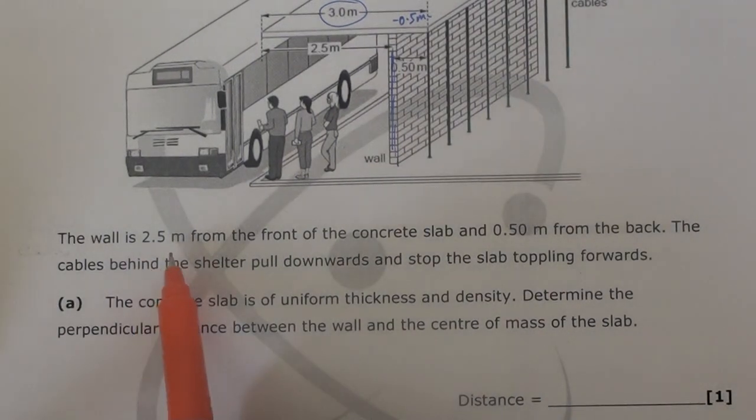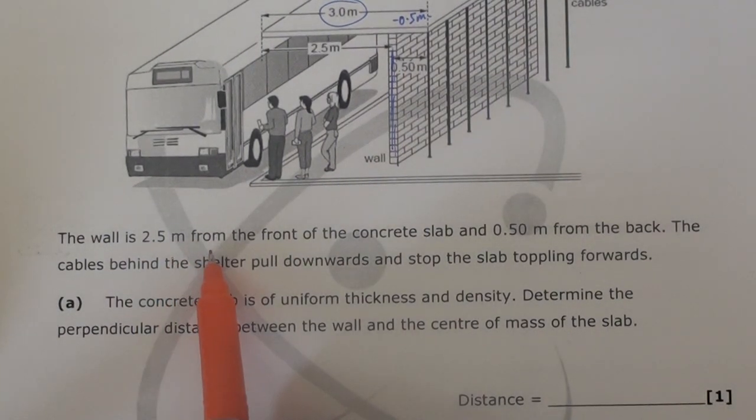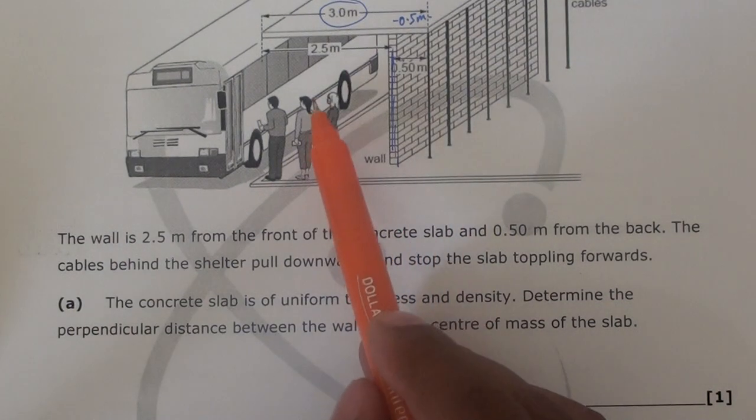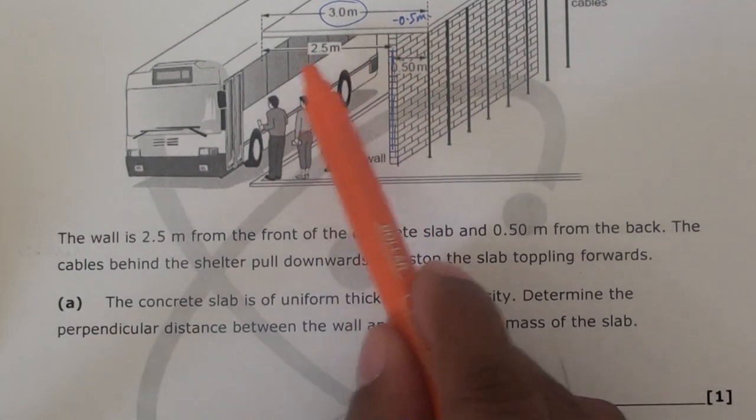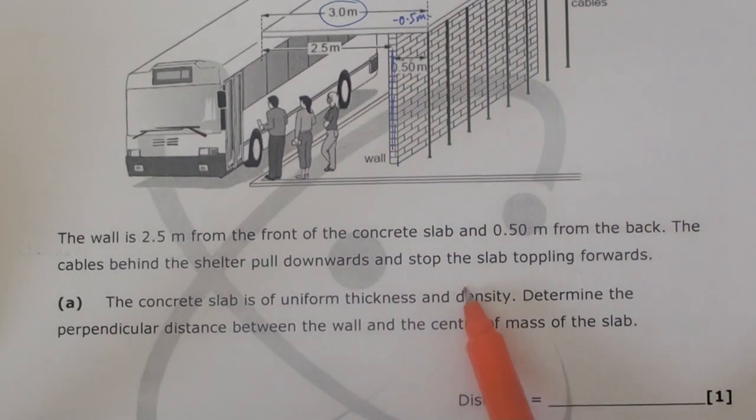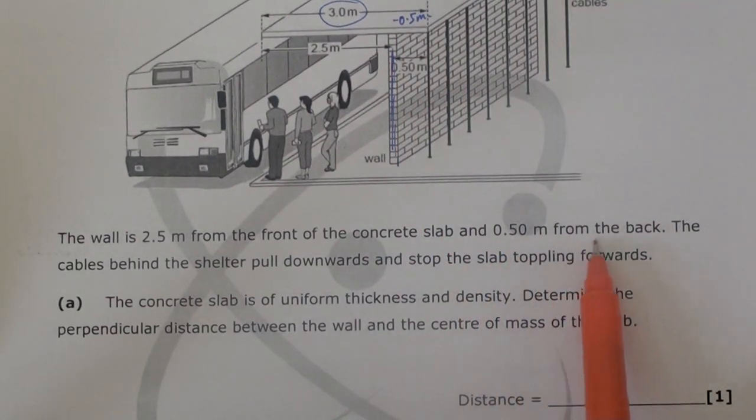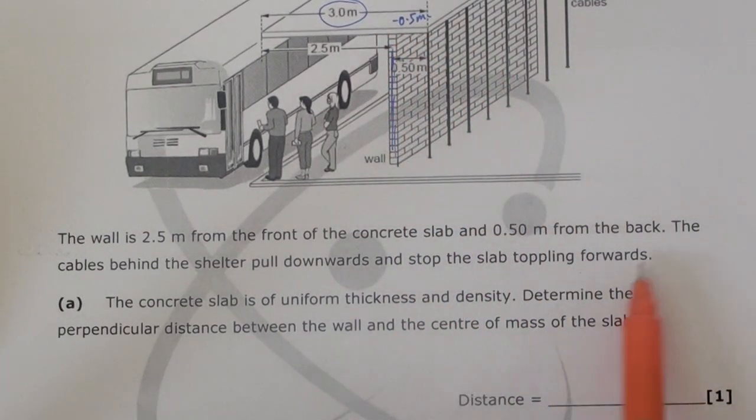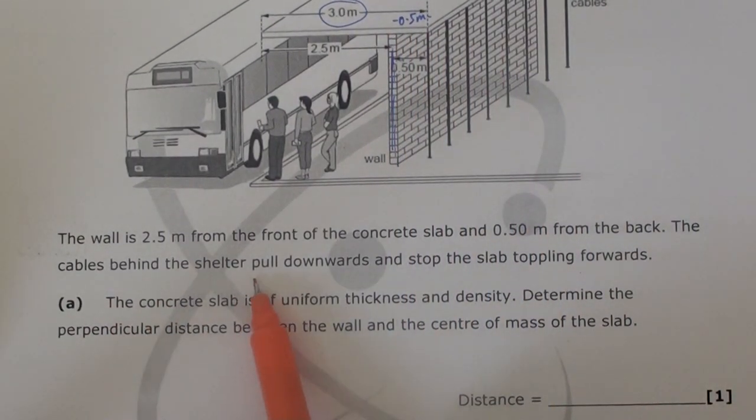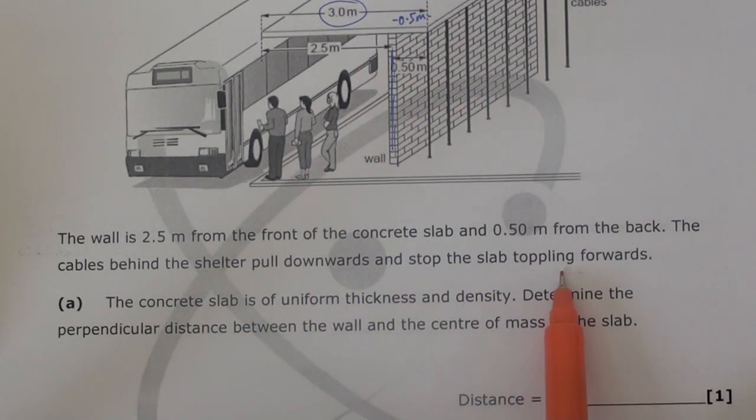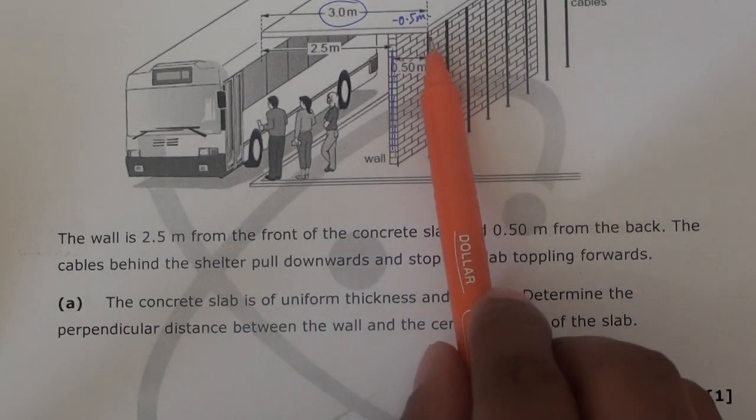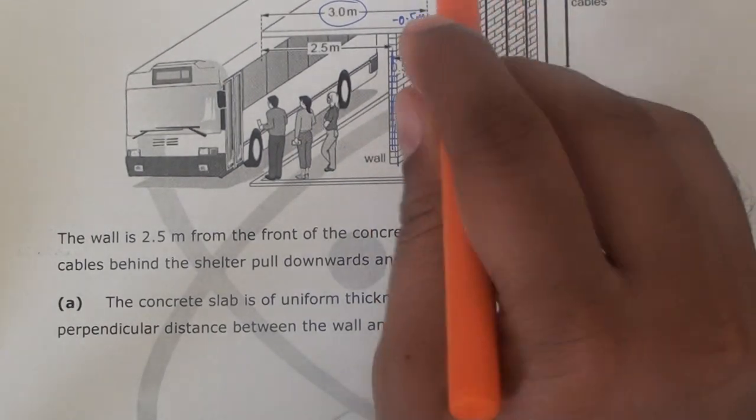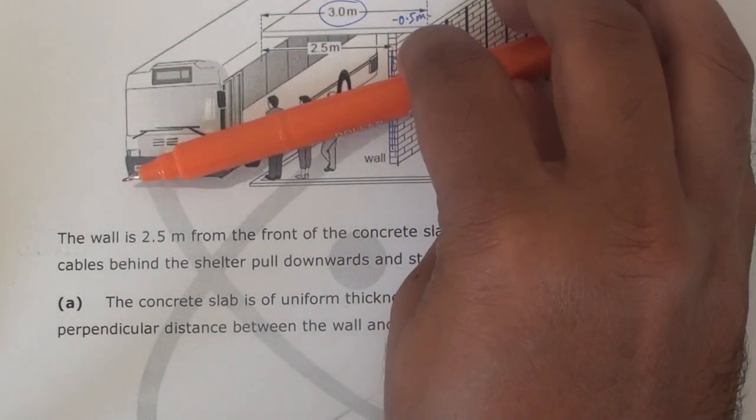So it says the wall is 2.5 meters from the front of the concrete slab. Now we have seen the front is 2.5 meters, right, and it's 0.5 meters from the back. The cables behind the shelter pull downwards and stop the slab toppling forwards. Even I have to tell you the cables actually force apply so that this slab doesn't fall off that way.